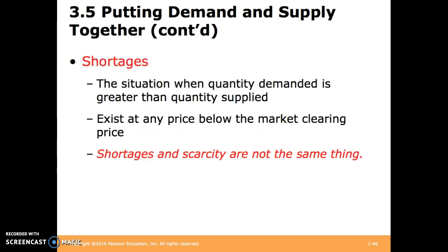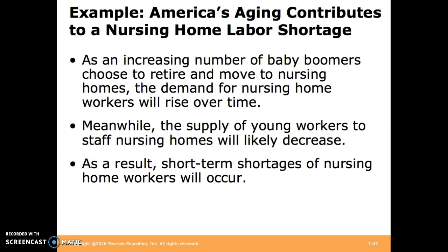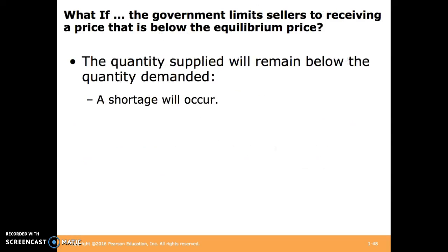Shortages occur when quantity demanded is greater than quantity supplied, and they exist at any price below the market clearing price. Shortages and scarcity are not the same thing. If the government limits sellers to receiving a price below the equilibrium price, the quantity supplied will always remain below the quantity demanded, resulting in a constant shortage.